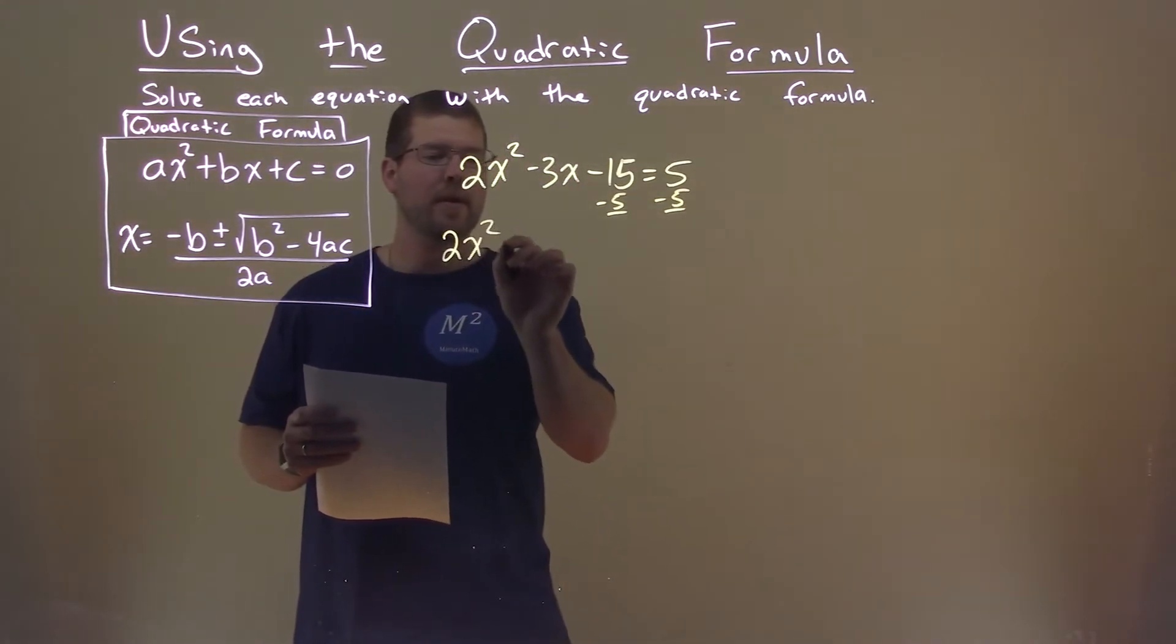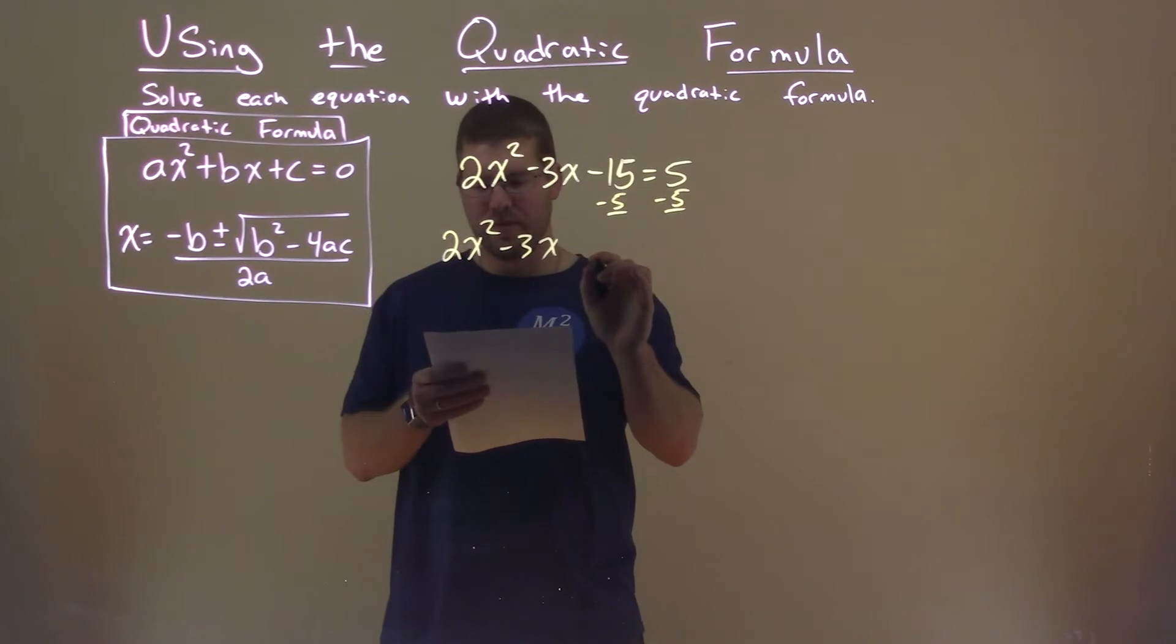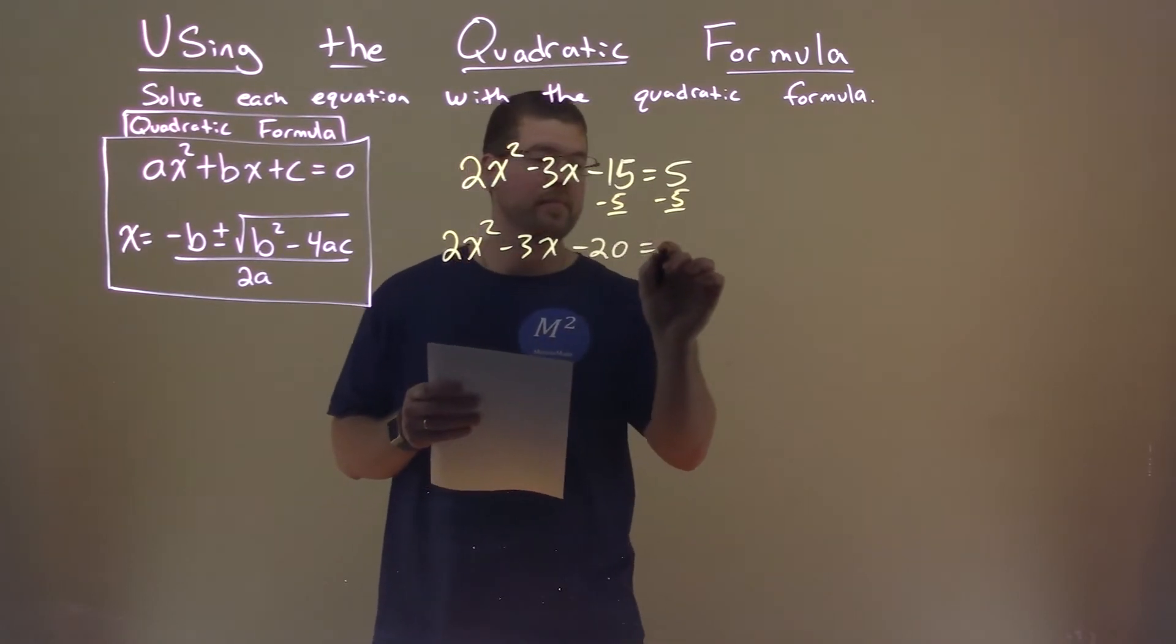We have 2x squared now, minus 3x, and then minus 15 minus 5 is a minus 20, and that's equal to 0.